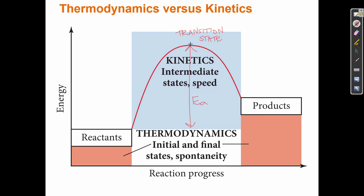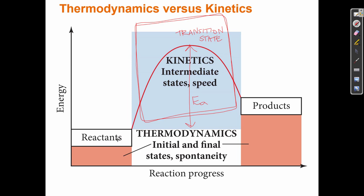Kinetics tells us that when we have a higher activation energy, that step generally goes slow, and when we have a lower activation energy, that step goes fast. When thinking about kinetics we're really looking at the transition state and the activation energy — a large activation energy means a slow reaction and a small activation energy means a fast reaction. When looking at thermodynamics, we're much more concerned with the difference between the potential energy of the reactants and the potential energy of the products.